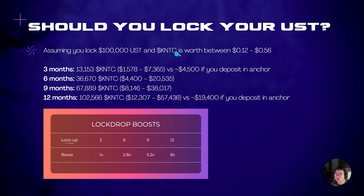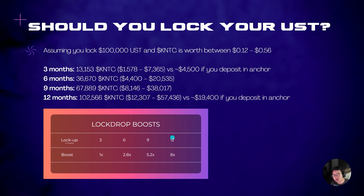If you had put the 100k into ANC, you only get about 19.4k. So if you have 100k UST that you know you're not going to touch for one whole year — which is a really, really long time in crypto — but you're really confident you're not going to touch it, then you can consider using a full 100k to put into the KNTC lock drop for one year. That also gives you 20% allocation of your lock drop amount to borrow KUST, so you can borrow up to 20k KUST if you put in 100k UST.